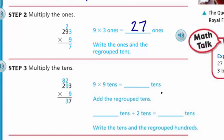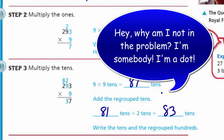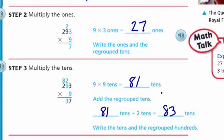Step 3 says multiply the tens. Look how the two nines are highlighted blue. We take 9 times 9, which is 81, but we need to add that 2 — and 81 plus 2 is 83. That's why we put the 3 down there, and then we carry the 8 up into the hundreds place, because we're regrouping again. So 9 times 9 — those are tens — equals 81 tens. We add the two regrouped tens from above, giving us 83 tens. We write the tens and the regrouped hundreds, because 83 tens is really 830 — we have 8 hundreds that need to move over. The 3 stays down because that's the tens.